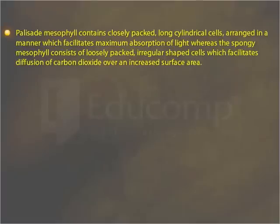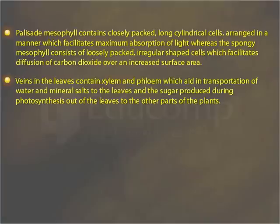Photosynthesis is carried out in the mesophyll, which contains two layers: palisade mesophyll and spongy mesophyll. Palisade mesophyll contains closely packed, long cylindrical cells arranged to facilitate maximum absorption of light, whereas the spongy mesophyll consists of loosely packed, irregular-shaped cells which facilitate diffusion of carbon dioxide over an increased surface area. Veins in the leaves contain xylem and phloem, which aid in transportation of water and mineral salts to the leaves, and carry the sugar produced during photosynthesis out of the leaves to other parts of the plant.